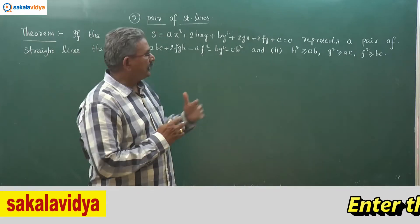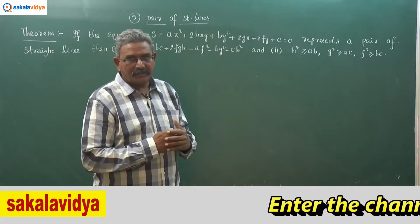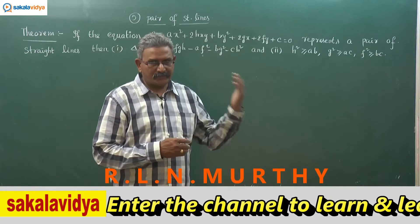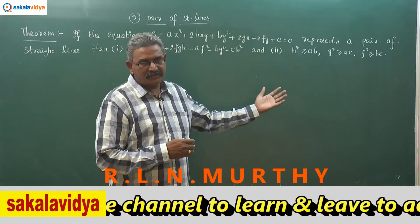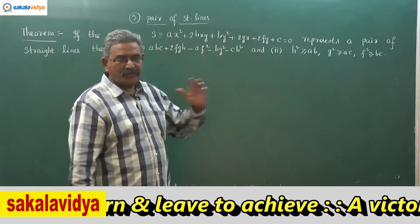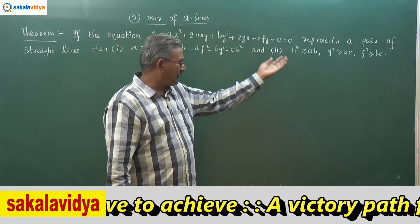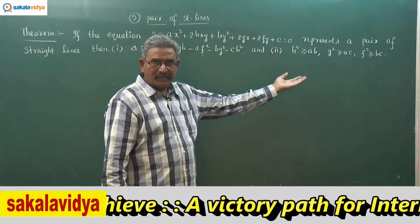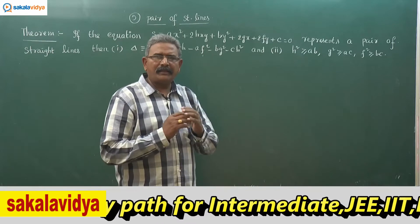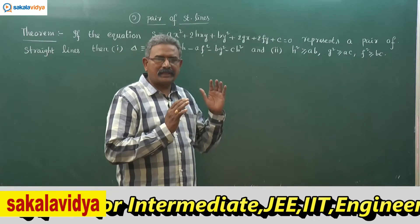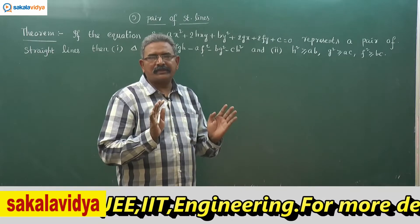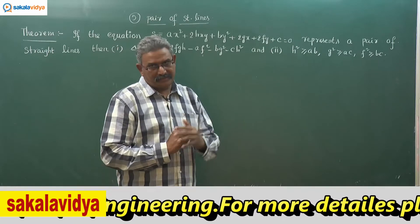In order to represent a pair of straight lines, the following conditions must be satisfied: abc + 2fgh − af² − bg² − ch² = 0, and h² ≥ ab, g² ≥ ac, f² ≥ bc. If at least one condition is not satisfied, then this equation does not represent a pair of straight lines.